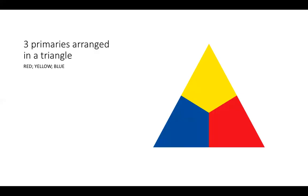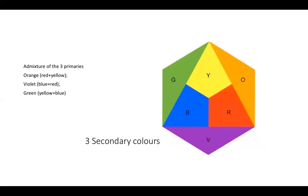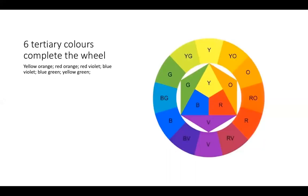The first part of the colour wheel is the three primary colours: red, yellow and blue. Then there are three secondary colours, bringing us up to six. The secondary colours are the admixture of the three primaries: yellow and blue make green, red and yellow make orange, and red and blue make violet. Finally, we connect these with the tertiary colours — yellow-orange, red-orange, red-violet, blue-violet, blue-green and yellow-green — and that gives us the famous 12-step colour wheel.